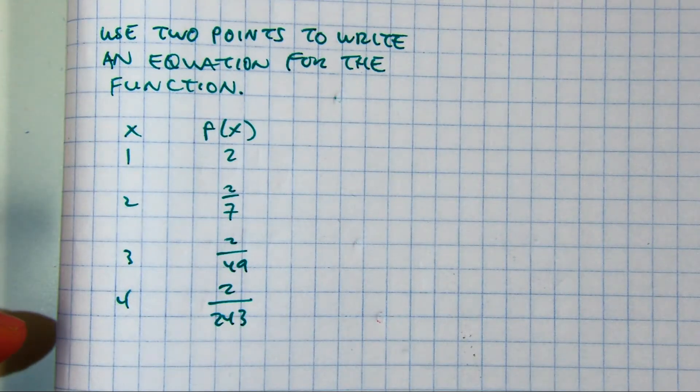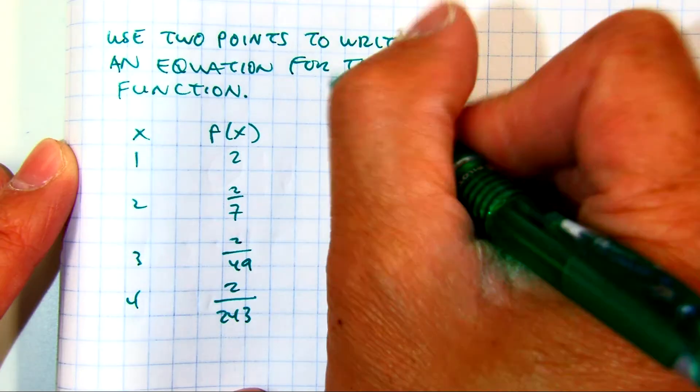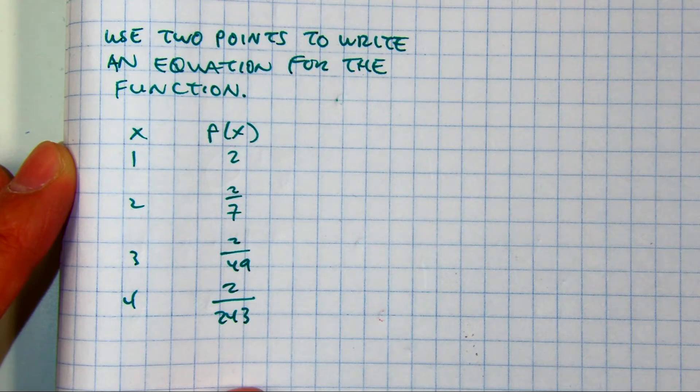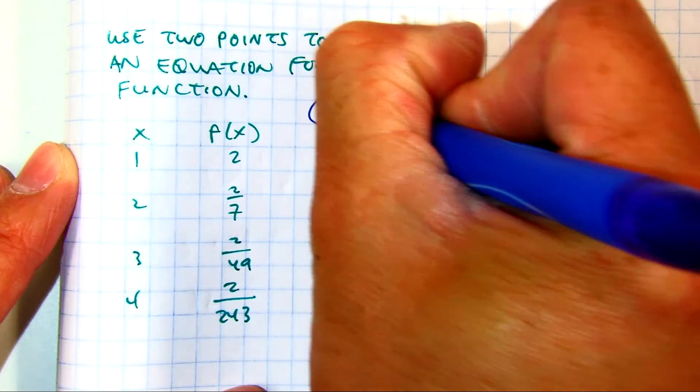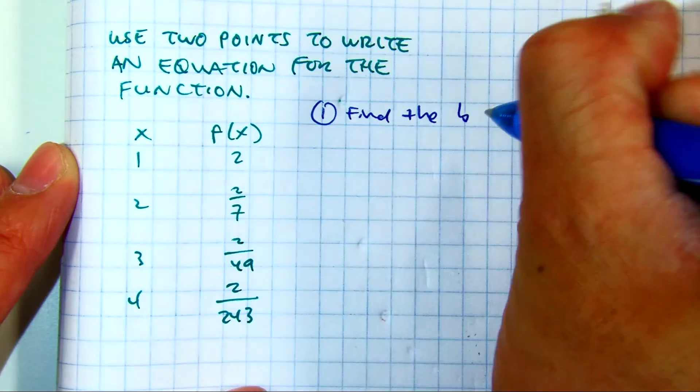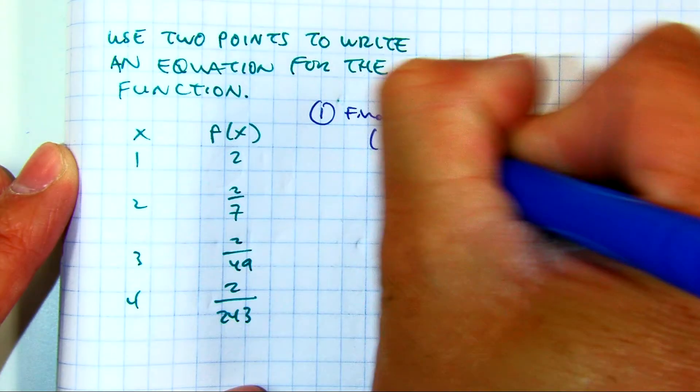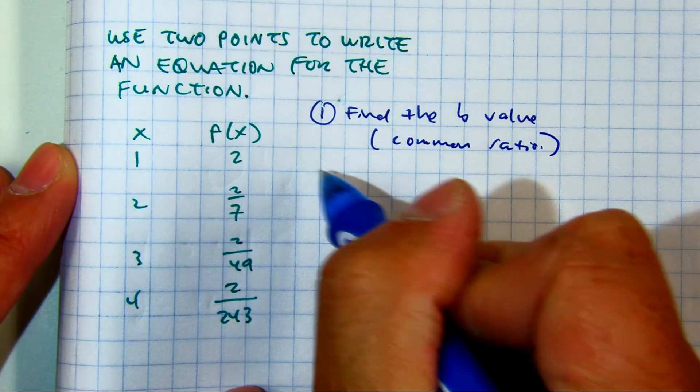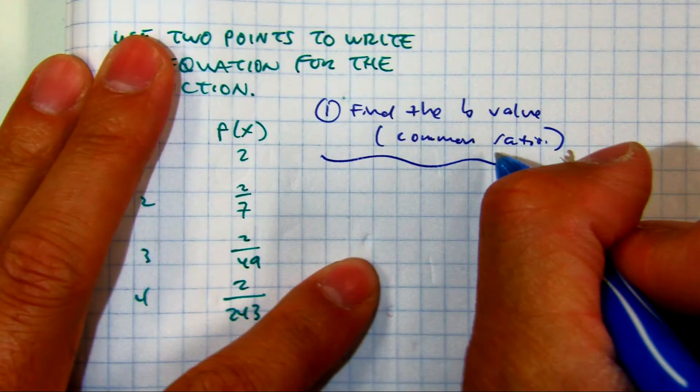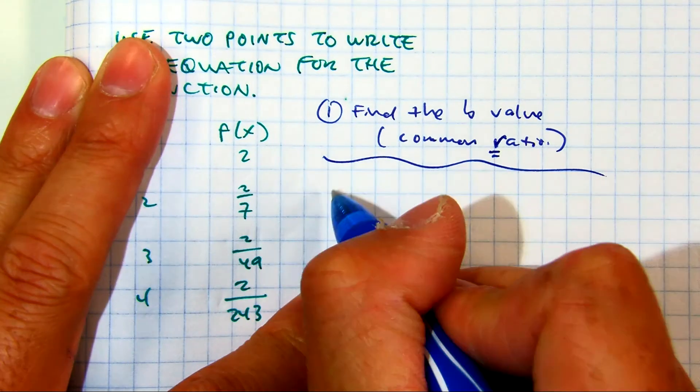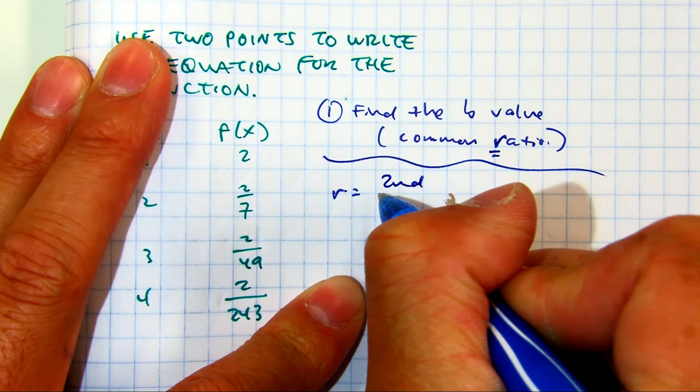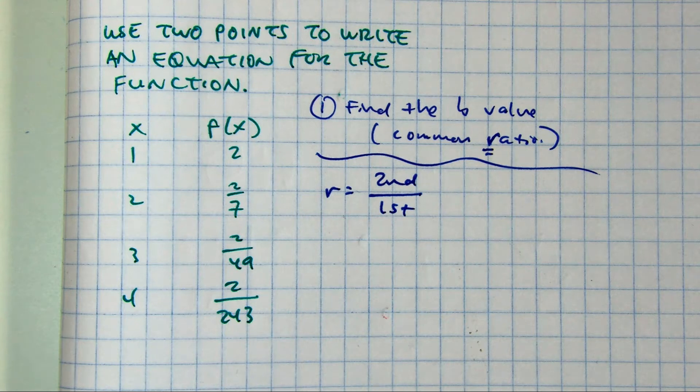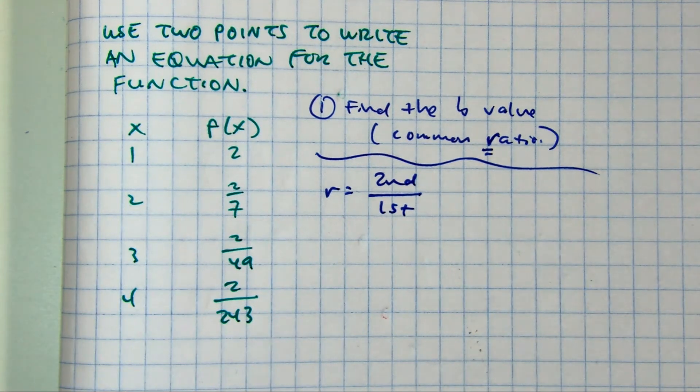The first thing I need to do is let's find the B value, the common ratio. And to find the common ratio R, I'm going to take the second over the first. Second over the first. I'm going to use our best friend, fractions.